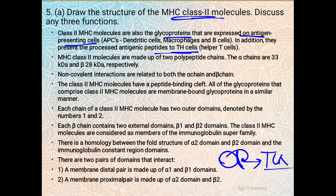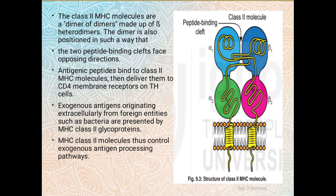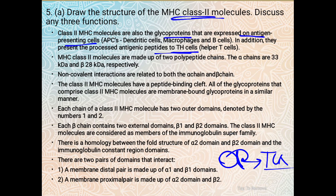MHC class 2 molecules are made up of two polypeptide chains. The alpha chains are 33 kilodalton and beta chains are 28 kilodalton respectively. Non-covalent interactions connect both the alpha and beta chains. There are two alpha chains and two beta chains, with a gap called the peptide cleft or peptide binding cleft. This is a transmembrane protein. Alpha and beta chains are connected through non-covalent interactions.